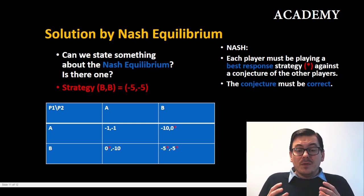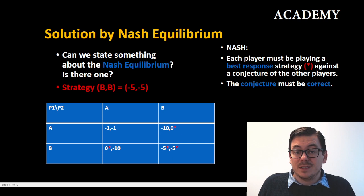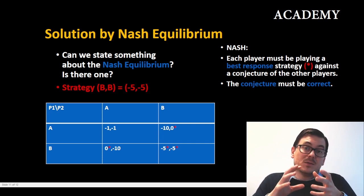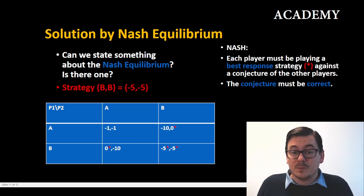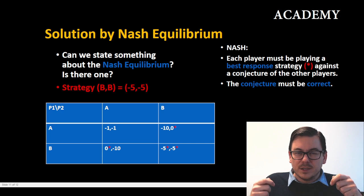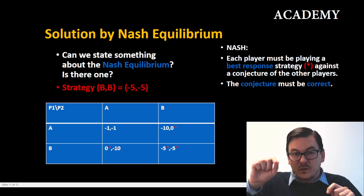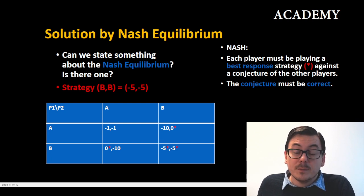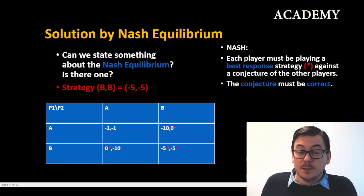Therefore both of them are actually situated and want to fulfill this best response against each other, and because we have two best responses, two stars, this is kind of a quick way to find a Nash equilibrium putting in the stars. Well then we can say that minus five, minus five, strategy BB is a Nash equilibrium.